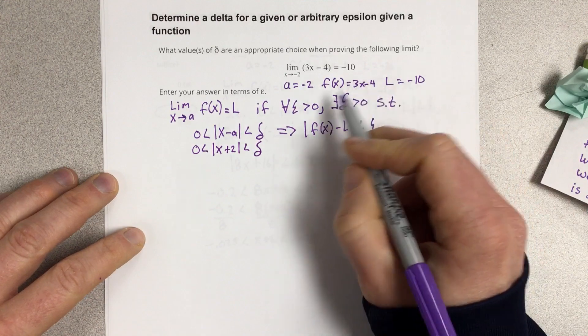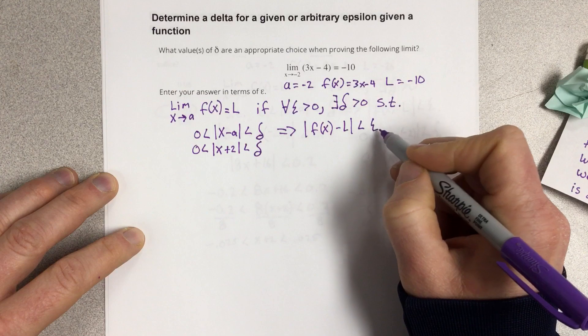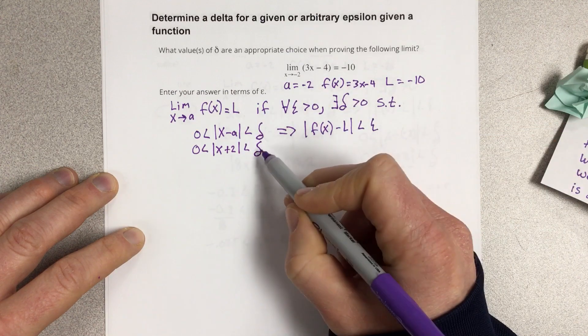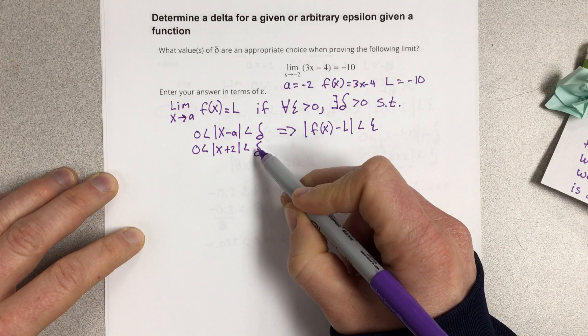And then we can start to fill in this side. We're going to work with this right side to figure out what our epsilon needs to be, and then that would be what our appropriate choice for delta would be to prove this limit.